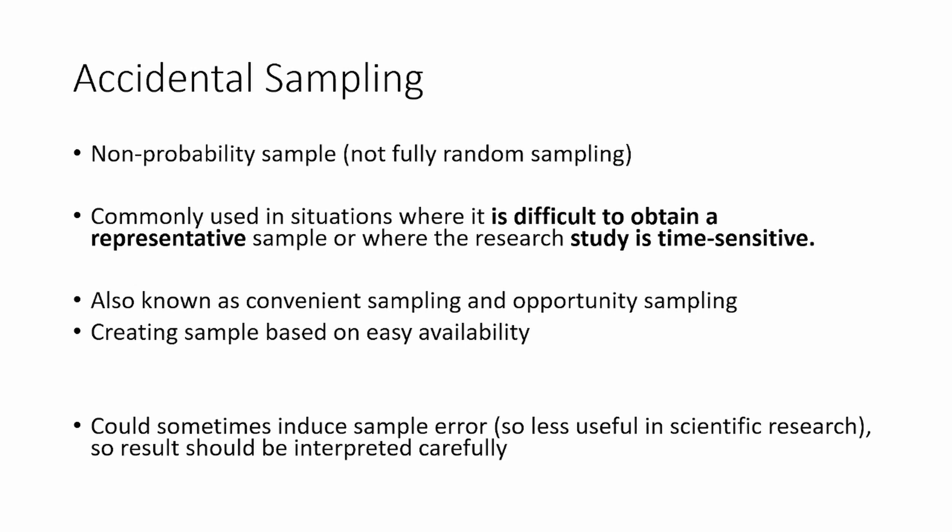That is not often the case, because in most situations you will be able to have a representative sample. But in some scenarios you may have a tough time getting a representative sample — then you compromise on representativeness for the sake of less cost, less time, quick research. Often people misuse that, by the way, and I'll talk about that. In research which is time-sensitive or cost-sensitive, where people do not have money or time to get a very good representative sample, they tend to prefer accidental sampling.